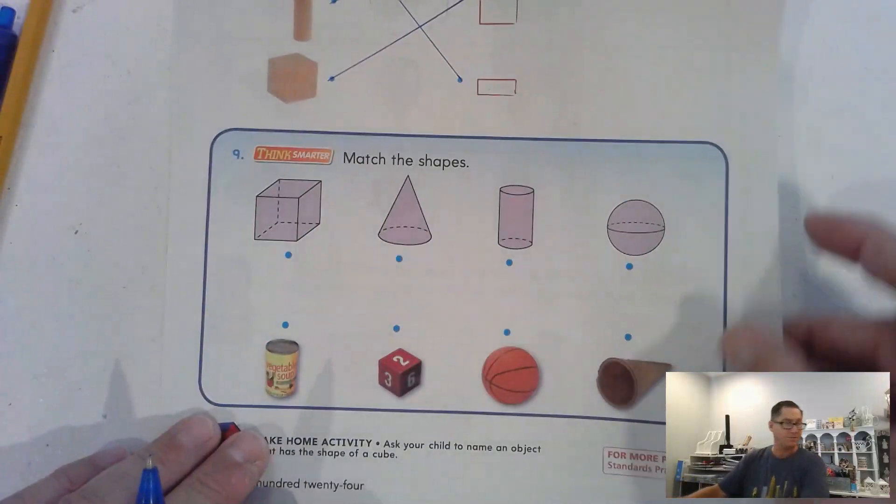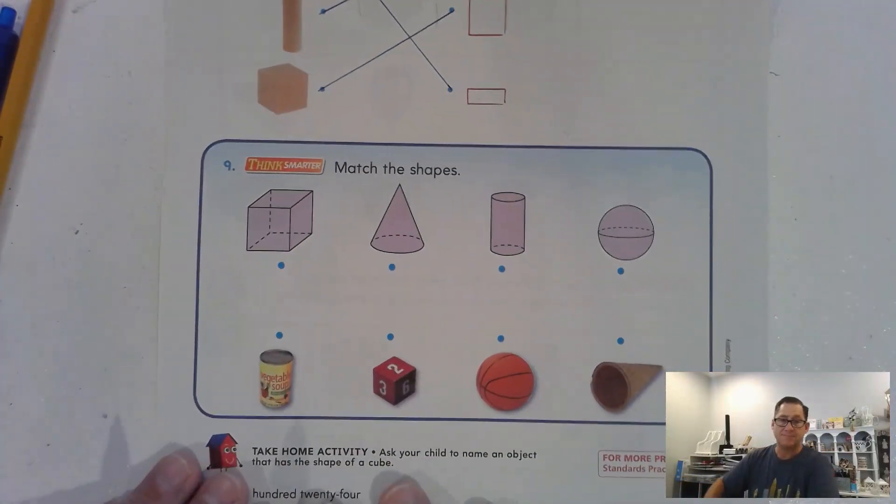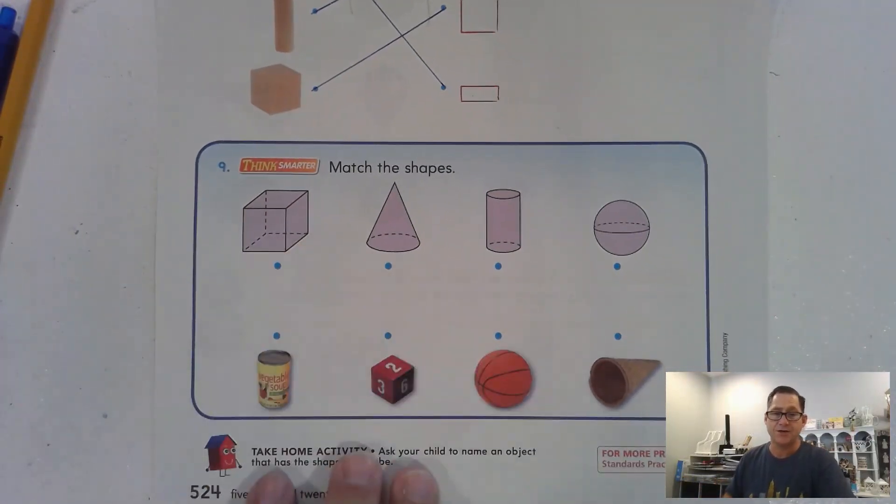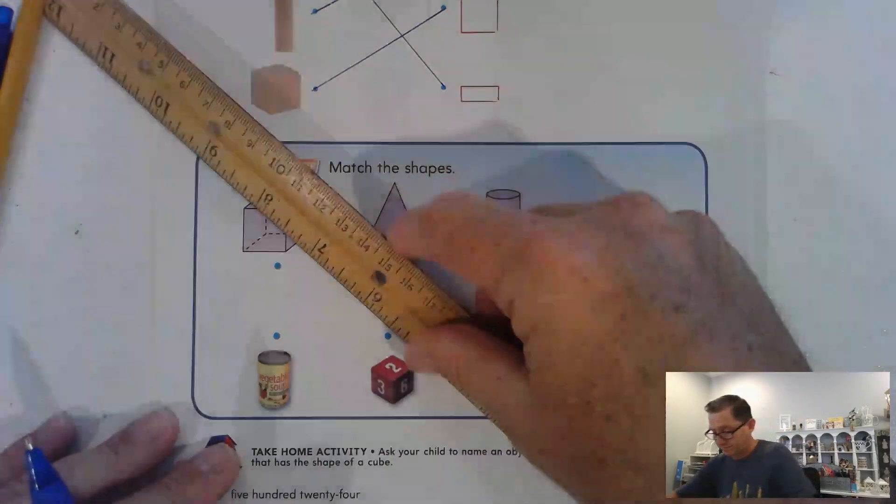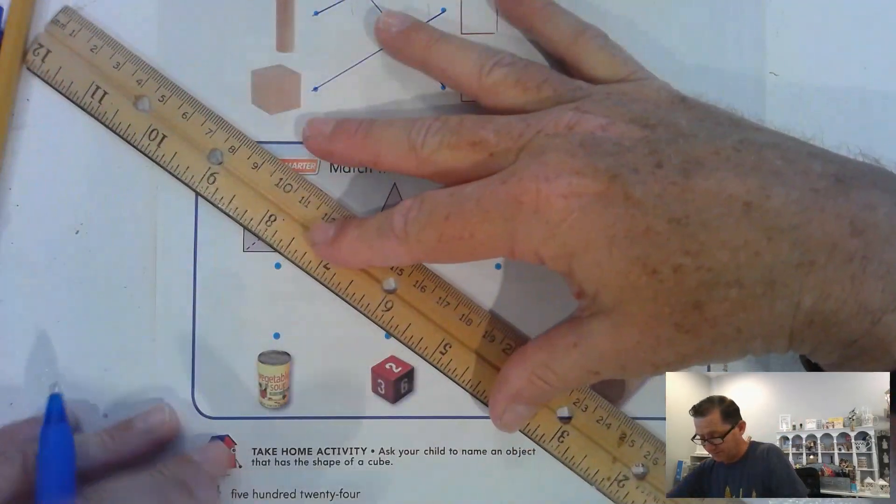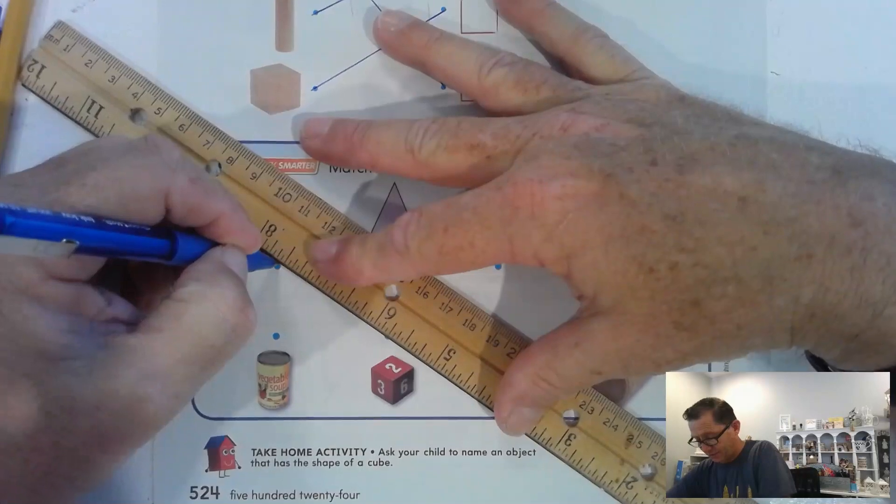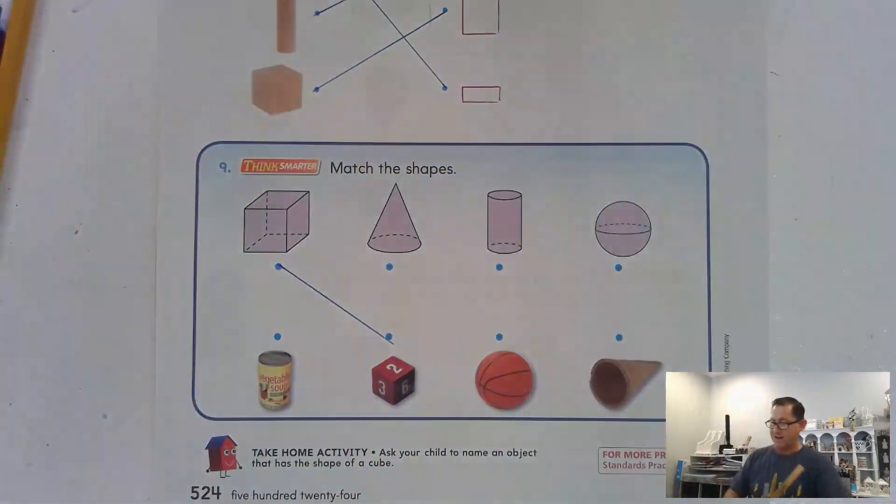And the last question for this first lesson. Match the shapes. Which one is a cube? Okay. Well, we've already had this shape and identified it as a cube. So, we have that.